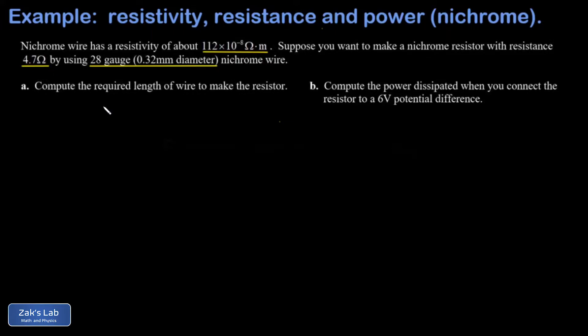Remember that the formula for the geometry of resistance is R equals rho L over A, where rho is the resistivity, L is the length of the wire, and A is the cross-sectional area of the wire.